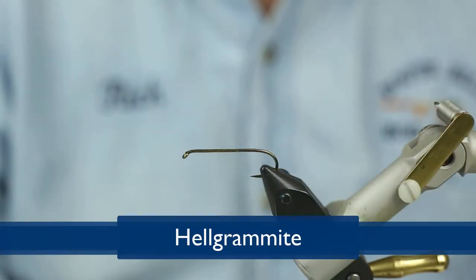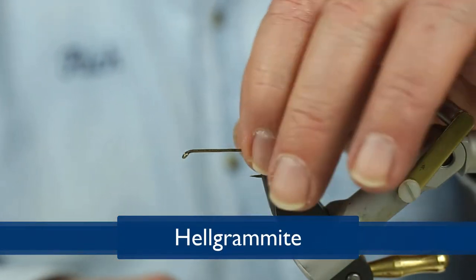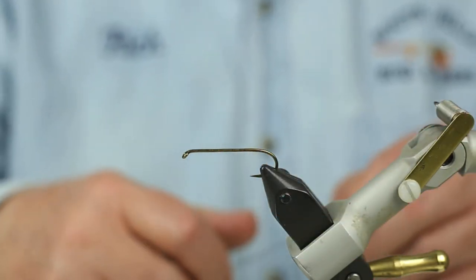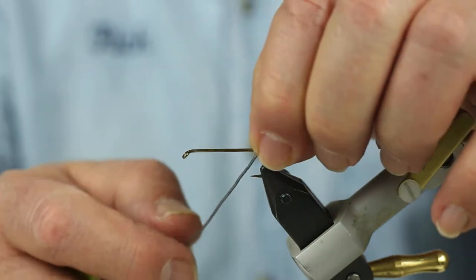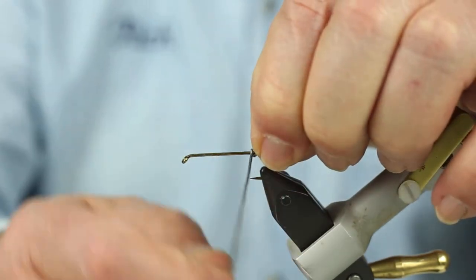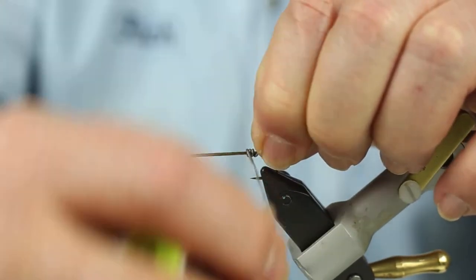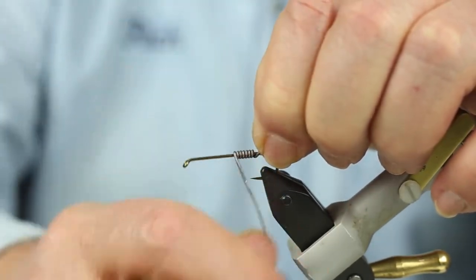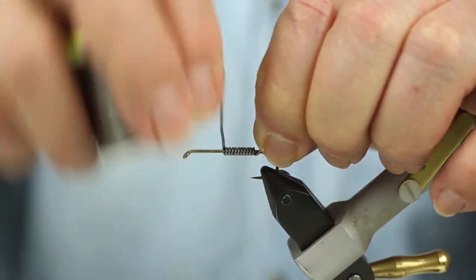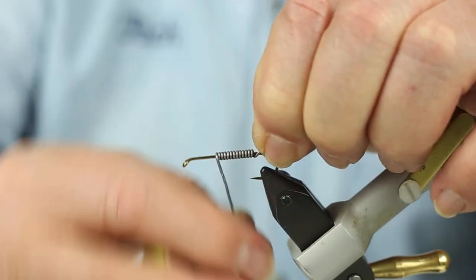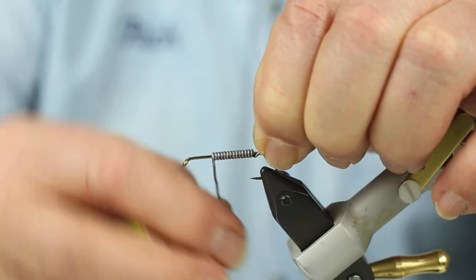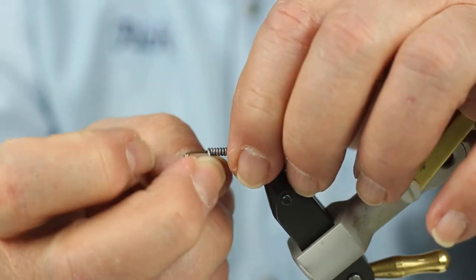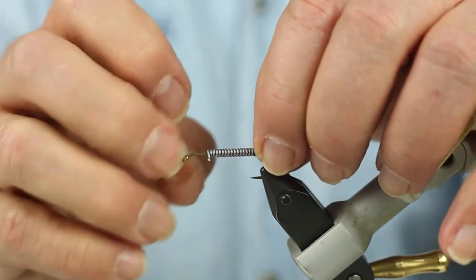We're tying the Helgramite nymph. First I put in a hook. It's a streamer hook. I've debarbed it of course and I'm going to start by on the straight part of the shank making turns of 030 lead weight. I'm going to make these turns tight against each other and I'm going to cover about two-thirds of this hook with lead weight.